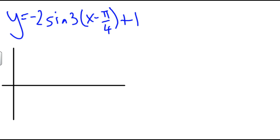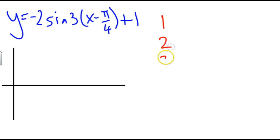We should know that for one cycle of a sine graph, I need to create five major points over the period for that graph. So I know that I need to create a first point, a second point, a third point, a fourth point, and a fifth point.